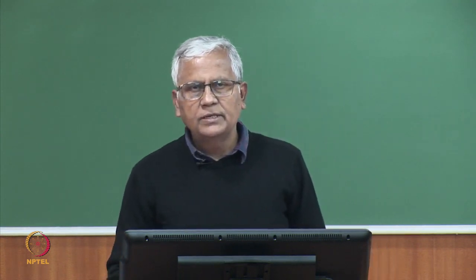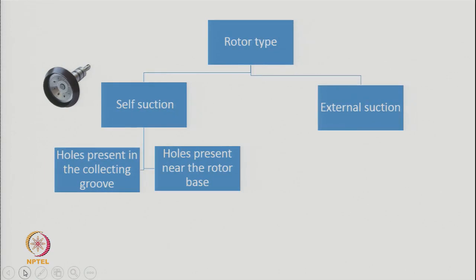There are basically two types of rotors: self-suction and external suction. In the self-suction type, there are two varieties — holes present in the collecting groove, or holes present near the rotor base. The rotor itself acts as a suction pump and no external suction is needed. In external suction rotors, the rotor has no holes, but the rotor chamber is connected to an external suction unit.